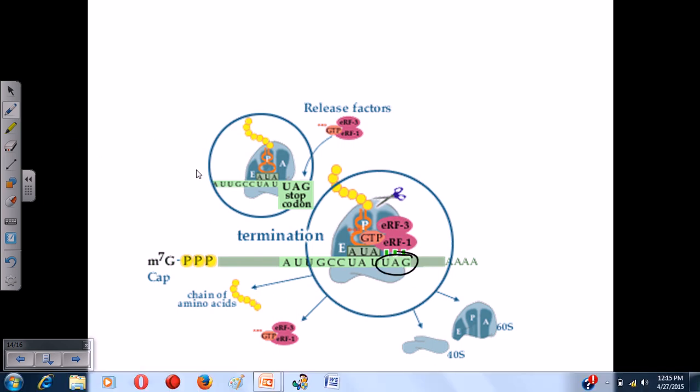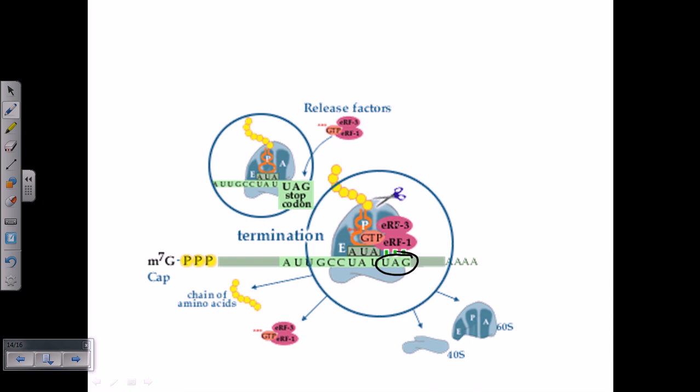So once it reaches the stop codon, what will happen: the factors called release factor, which are required for the termination phase, release factor 3 and release factor 1. Those two release factors will bind, and release factor 1 is a GTPase. Release factor 3 is just a carrier which will carry the release factor 1, which is a GTPase, into the place.